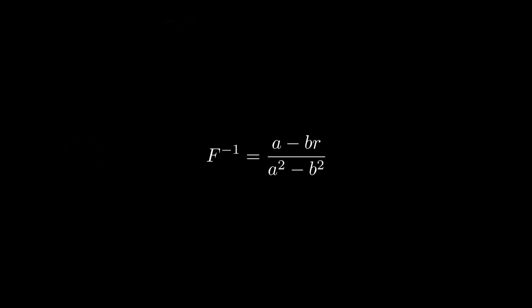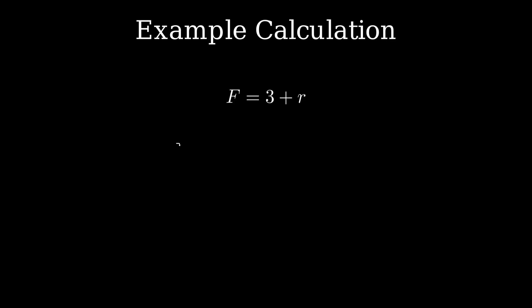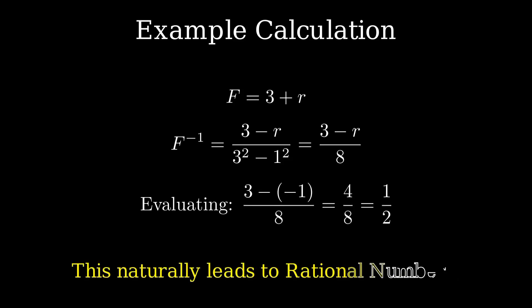Therefore, the inverse of a plus br is a minus br over a squared minus b squared. Let's try it with a real example. Let f equal 3 plus r. Its inverse is 3 minus r over 9 minus 1, which simplifies to 3 minus r over 8. Evaluating with r equals negative 1, we get 3 minus negative 1, which is 4, over 8, giving one half. This is our first appearance of a rational number, showing how dyadic numbers can naturally lead to fractions, even though we began with only whole numbers.